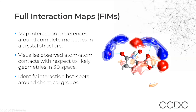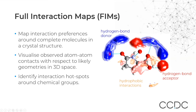We are visualizing a 3D map of where we would expect interactions. In blue are areas where we would expect to find hydrogen bond donors. In red, areas where we would expect to find hydrogen bond acceptors. And in orange, areas where we would expect to find hydrophobic interactions, such as aromatic or CH groups.